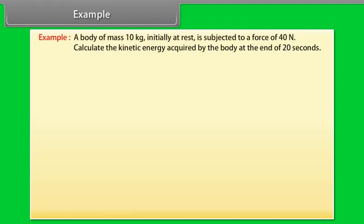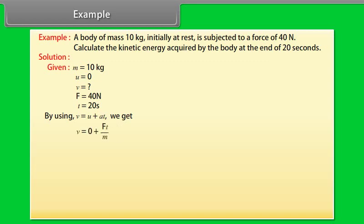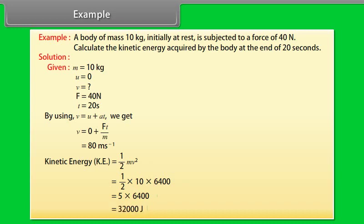Example. Let's take an example of kinetic energy. A body of mass 10 kg initially at rest is subjected to a force of 40 N. Calculate the kinetic energy acquired by the body at the end of 20 seconds. Let's see the solution. Given values are m equals 10 kg, u equals 0, F equals 40 N, t equals 20 seconds. By using v equals u plus at, we get v equals 80 m per second. Kinetic energy equals half mv square. On calculating, we get kinetic energy equals 32,000 joules.